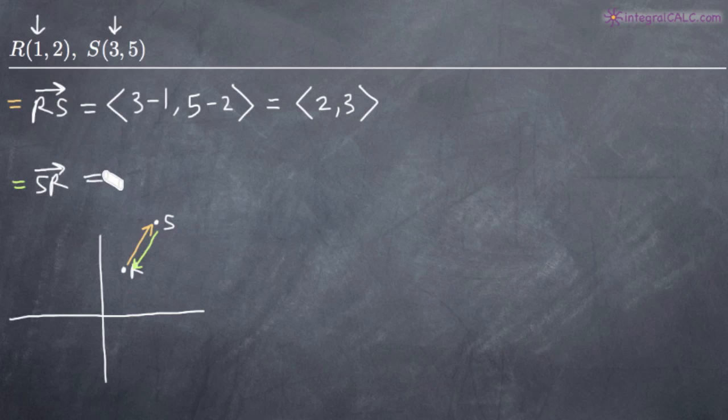Just to be clear, if we had to find the vector SR, we would just reverse these. We would do 1 minus 3 and 2 minus 5, and we would get <-2,-3>, which would be the exact same slope but in the complete opposite direction.